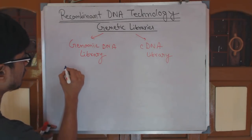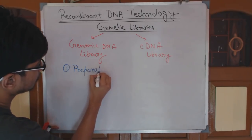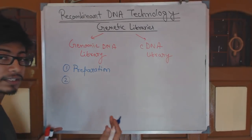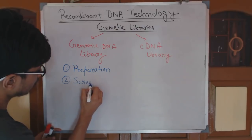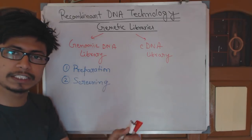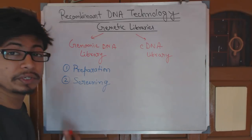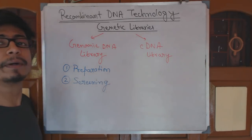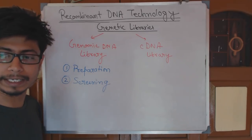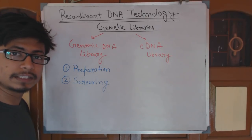We prepare the libraries so that we can get any gene we want by screening the libraries. So there are two stages for this library. One is the preparation of the library — we store all the gene data in those libraries. The second is the screening of the libraries. Preparation means we put all the genes into the vector and insert it into the bacterial cell to create that genomic library. It takes some time but it will be done only once.